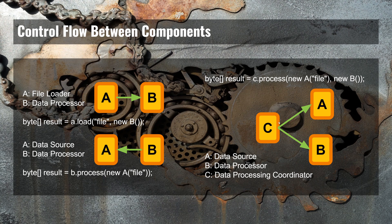It is C that needs to know about both A and B, so the interface of C needs to know about both A and B. This is just a different way of structuring the control flow and splitting the responsibility between the components of your application. As you can see, the control flow impacts both the decomposition and the interfaces of each component.